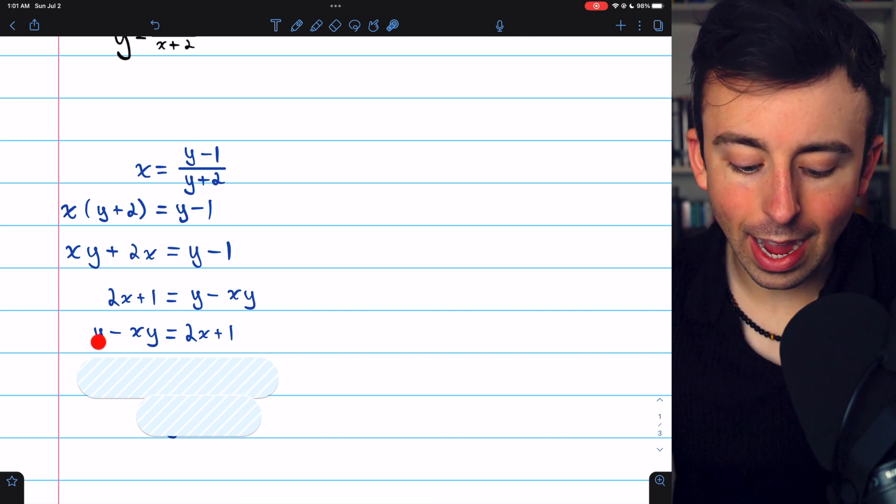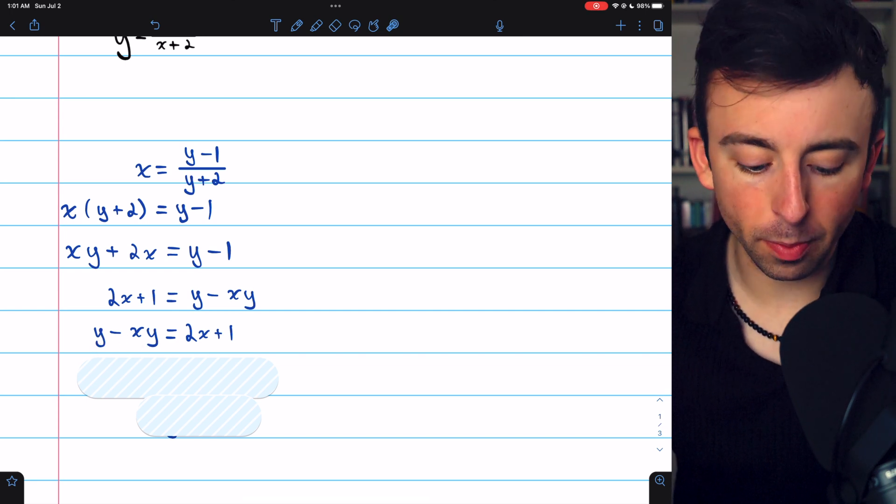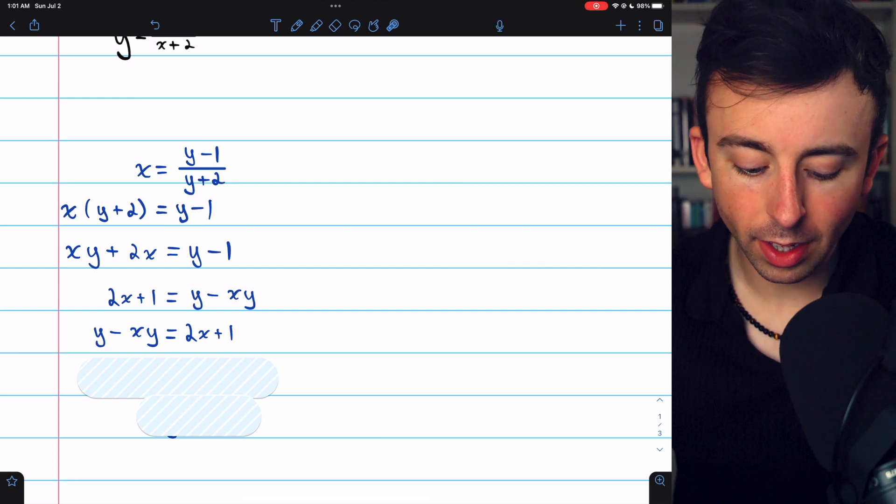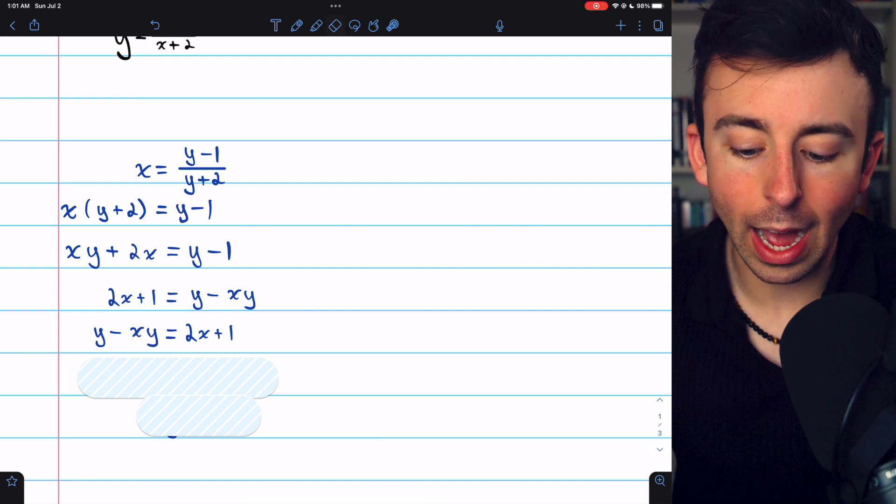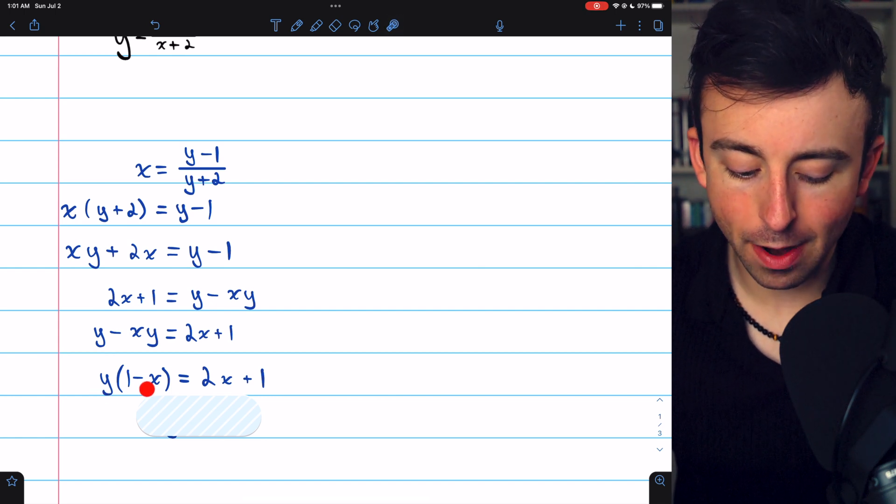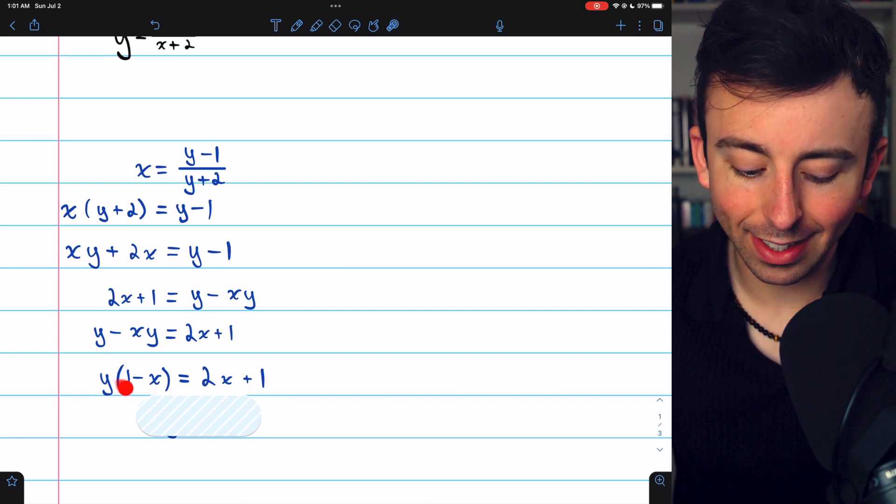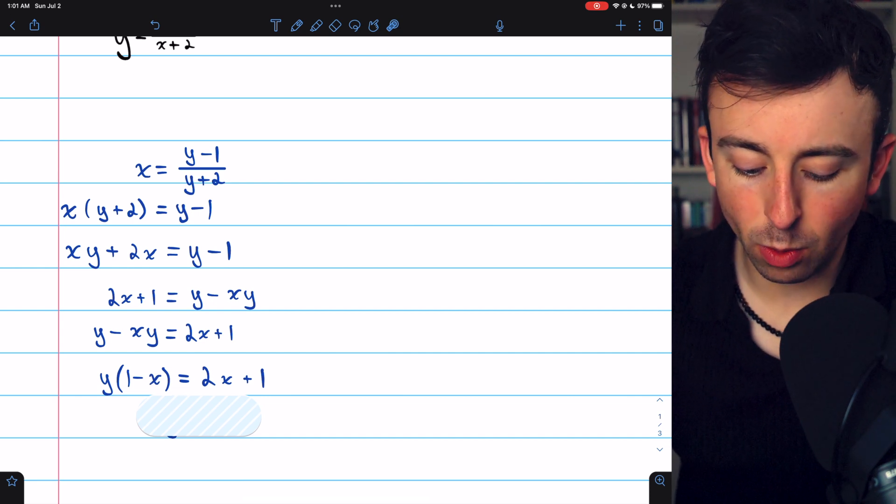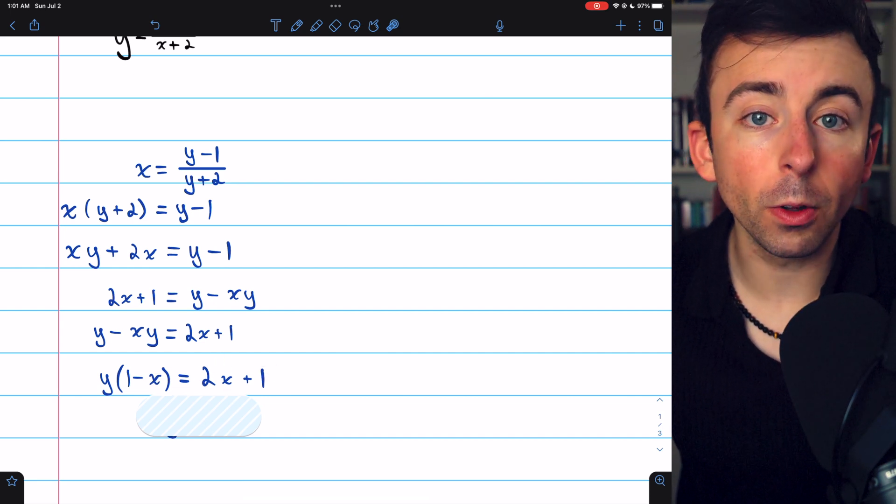Now let's factor a y out of both of these terms. This has one y in it, this has negative xy's in it. So if we factor out a y, we have y multiplied by one minus x. And this is equal to 2x plus one on the right side.